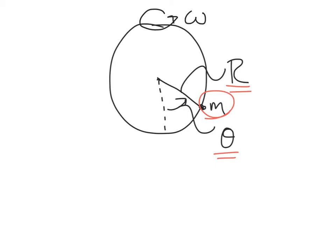Intuitively, what we expect is if the hoop is spinning really fast — if omega is really big — the bead is going to go from the bottom point up to 90 degrees, because the centrifugal accelerations due to the spinning are going to push it up against gravity along the wire. But if omega is small enough, the bead can actually stay down and oscillate back and forth around an equilibrium position. Let's see how that comes out using the Euler-Lagrange approach.